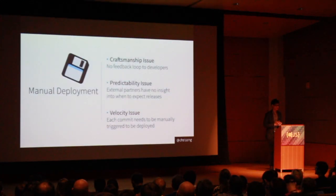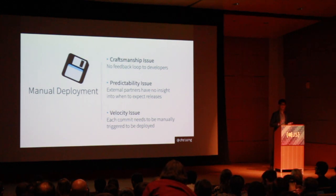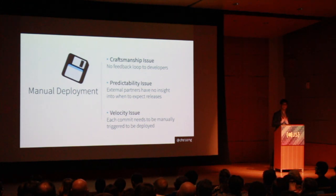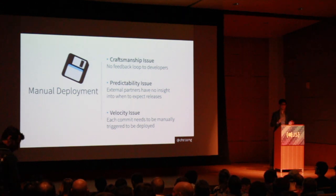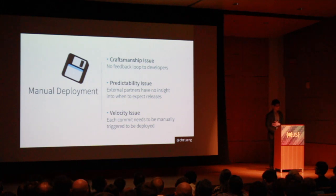For a manual deployment strategy, it kind of sucks for developers because craftsmanship takes a hit — there's no feedback loop, meaning once they submit their code they might never know if it actually works until it's deployed. There's no guarantee on when a change is going out; it depends on someone's physical whim to manually deploy it. And if developers have to deploy the code themselves, that incurs a velocity issue and a context switch.